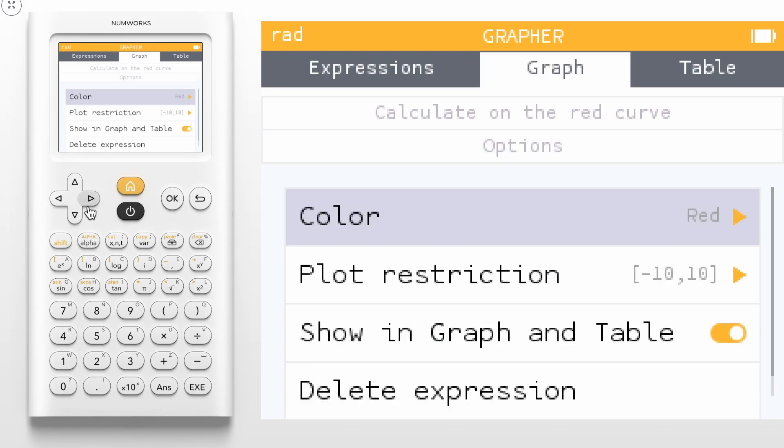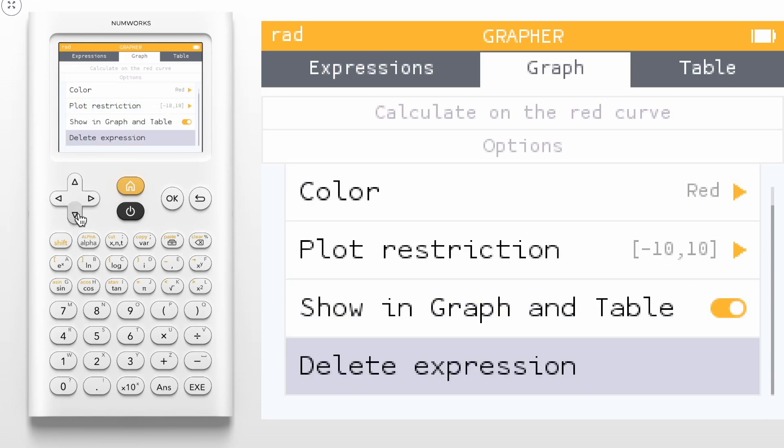Here, you can change the color, change the plot restriction, turn the line off and on, and delete the expression altogether.